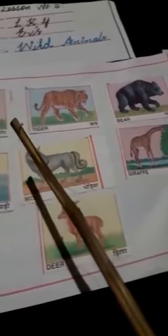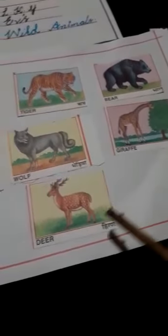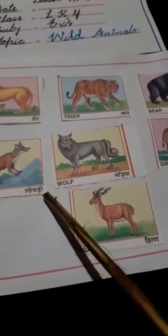So, dear students, these are all wild animals. These are all wild animals. Yeh sab wild animals. Jungle mein rahate hai.